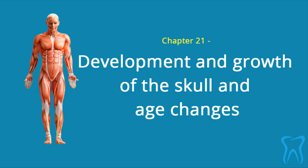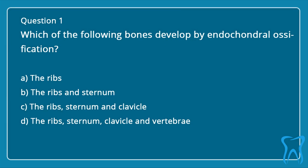Chapter 21: Development and Growth of the Skull and Age Changes. Question 1: Which of the following bones develop by endochondral ossification? a. The ribs. b. The ribs and sternum. c. The ribs, sternum, and clavicle. d. The ribs, sternum, clavicle, and vertebrae.